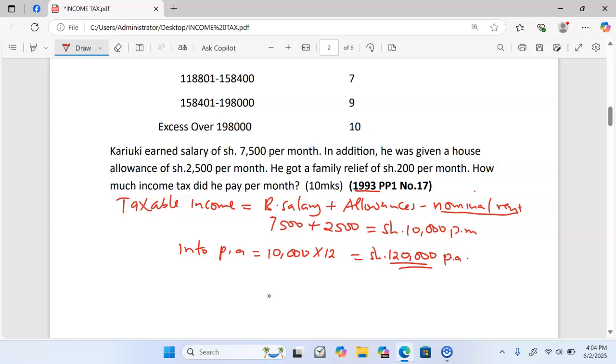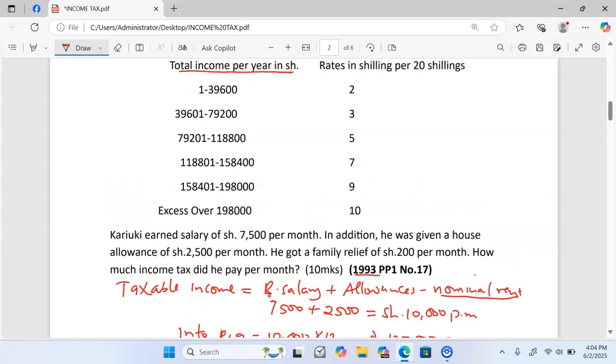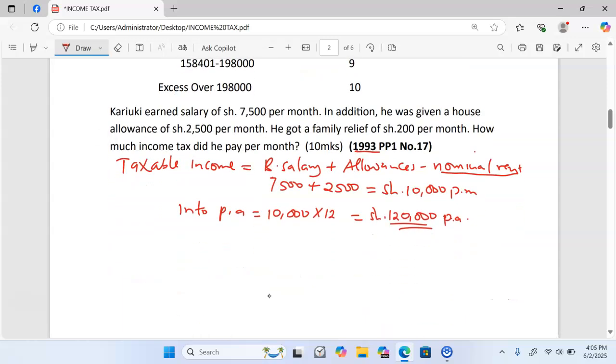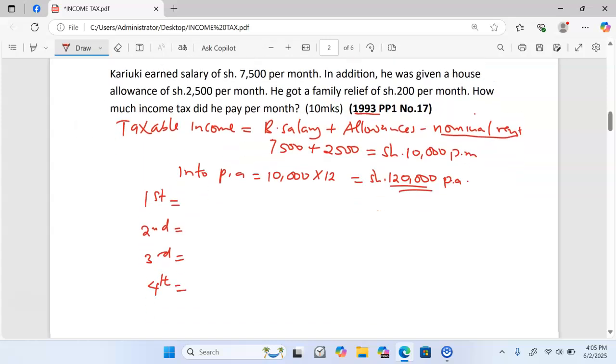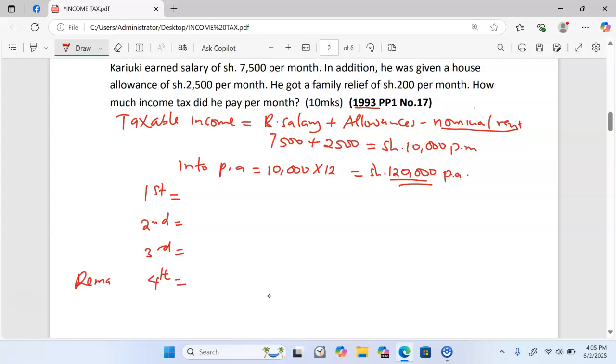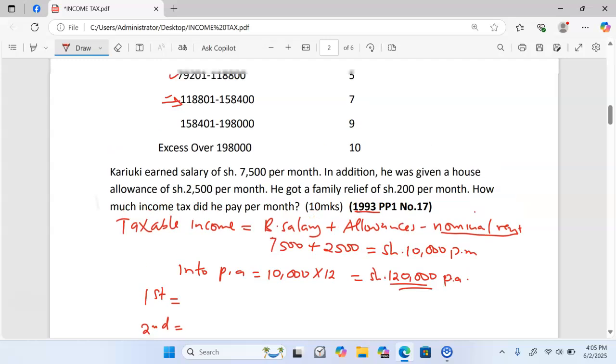From there now we check on where this amount lies. This amount of money, 120,000, lies between 118,801 and 158,400. That means we are going to tax one, two, three, four brackets. We are going to have four brackets: the first bracket, the second bracket, the third bracket, and lastly the fourth bracket.